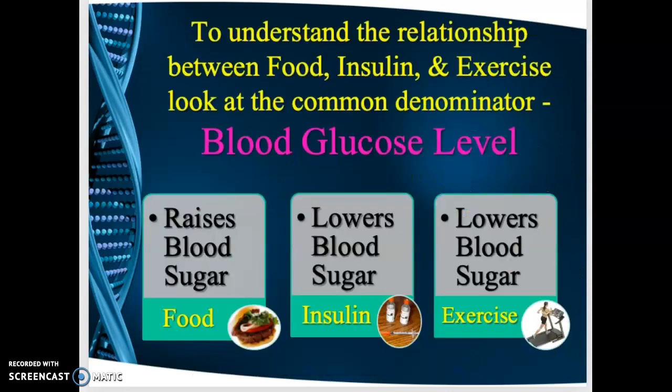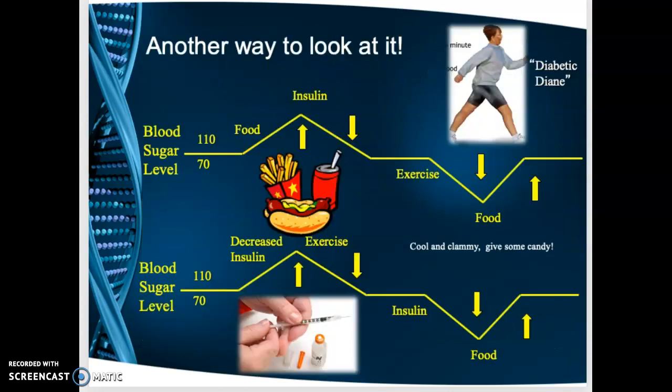To reinforce this concept: food raises blood sugar, insulin lowers blood sugar, and exercise also lowers blood sugar. Let's use a hypothetical patient, Diabetic Diane. She has a normal blood sugar in the morning — somewhere between 70 and 110.